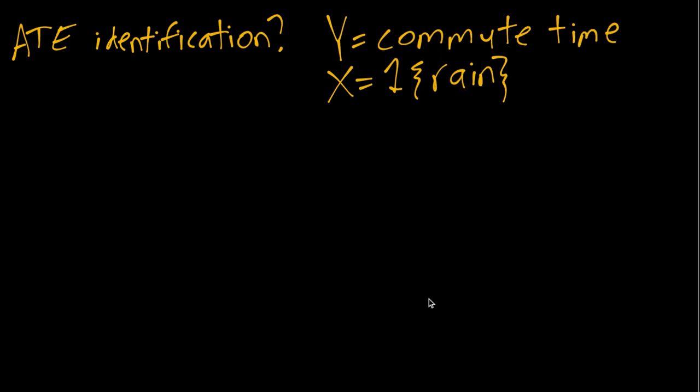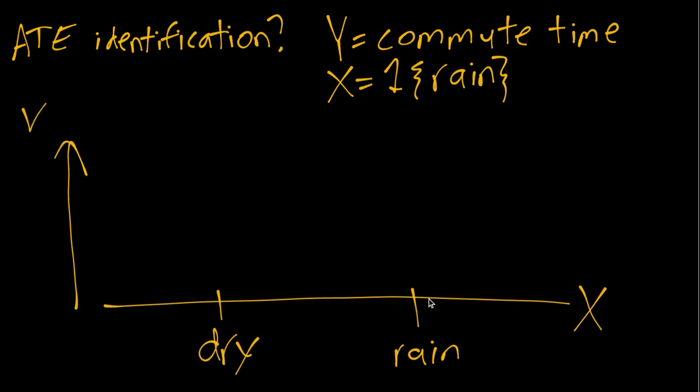Imagine further that we're interested in this relationship in Columbia, Missouri, which is where I live and where the University of Missouri is. Here on the horizontal axis we have the X variable, dry or rain, and then on the vertical axis we'll have commute times.